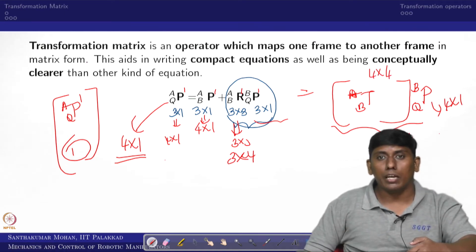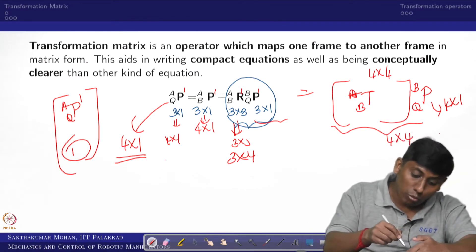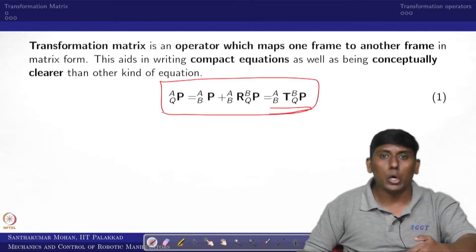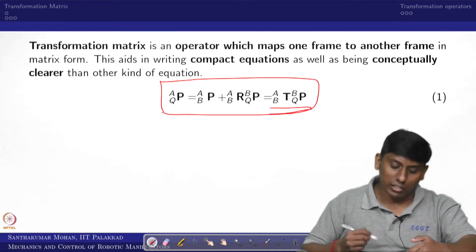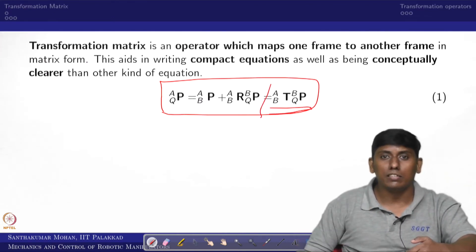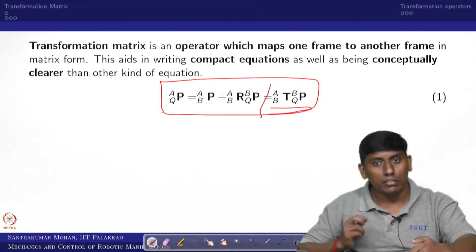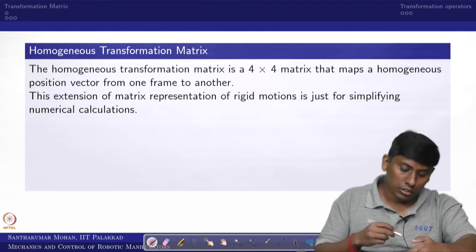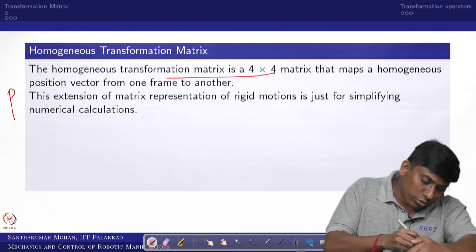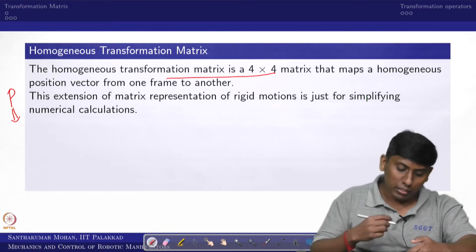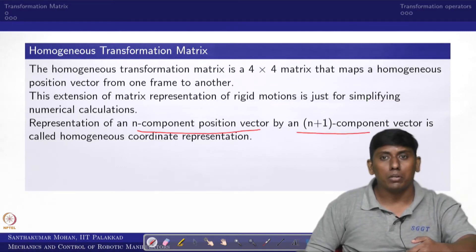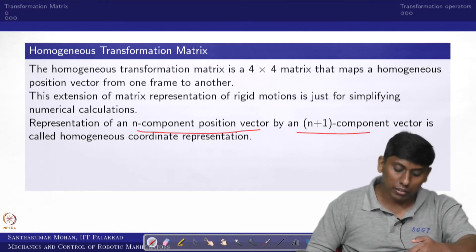This is what we are trying to write. The equation is not consistent as stated, since dimensions are 3×1, 3×1, 3×3, and 3×1 — not unit-wise consistent. So we bring a 4×4 matrix; the position vector is also increased by one dimension. The representation of an n-component position vector is increased to an n+1 component vector. This is what we call homogeneous coordinate representation.